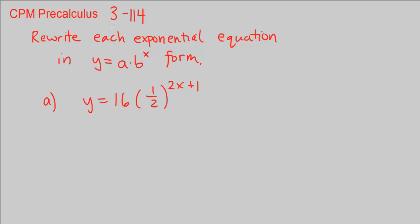This is CPM Pre-Calculus Chapter 3, Number 114. We want to rewrite each exponential equation so it has the form y equals a times b to the x. We're going to make it in this form so we're going to use the laws and properties of exponents to do so.